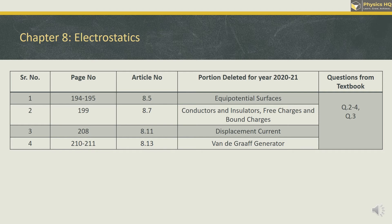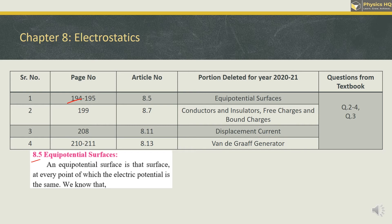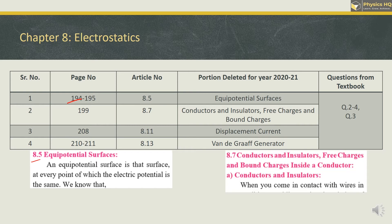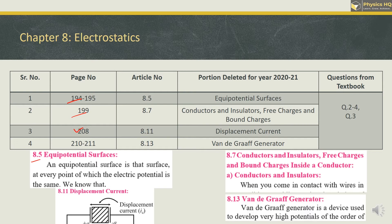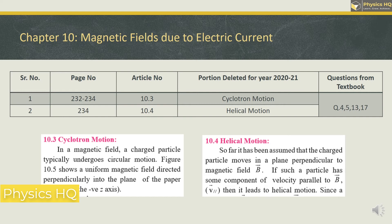In Chapter 8 Electrostatics, on page 194, the potential surface topic can be skipped. The theory topic of conductors, insulators, free charges and bound charges on page 199 is deleted. Displacement current explanation on page 208 and the Van de Graaff generator theory topic are also deleted. For Chapter 10 — Magnetic Field Due to Electric Current — sections 10.3 and 10.4: cyclotron and helical motion are deleted. Question numbers 4, 5, 13, and 17 can be skipped, found on pages 232 and 234.